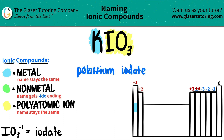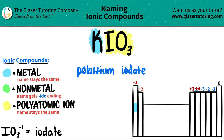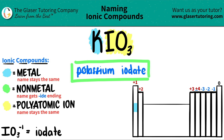Since this is ionic, make sure you know: do we need a roman numeral or not? We don't, because potassium is not in the transition block. We only need roman numerals for transition metals. So KIO₃ is just potassium iodate.